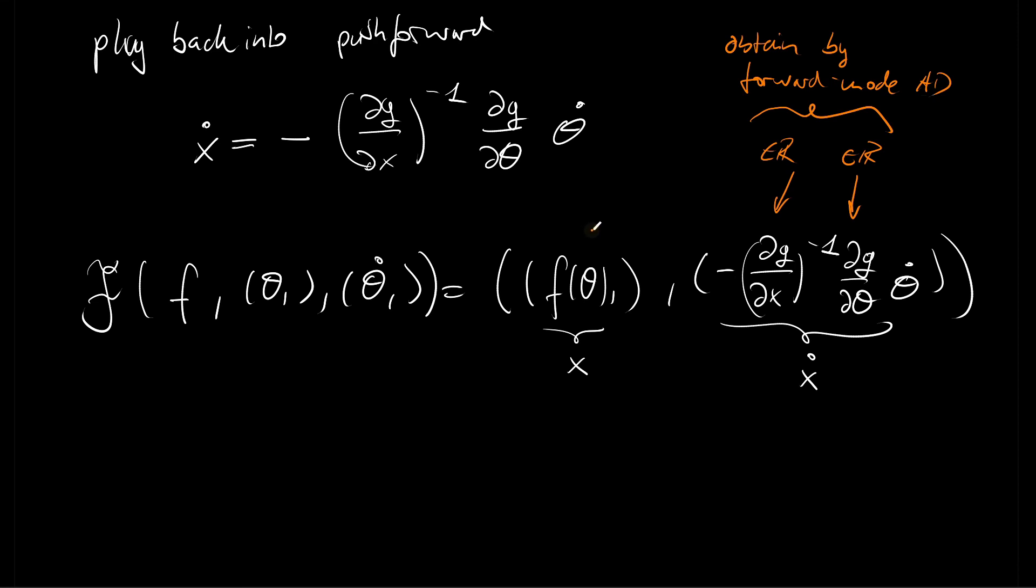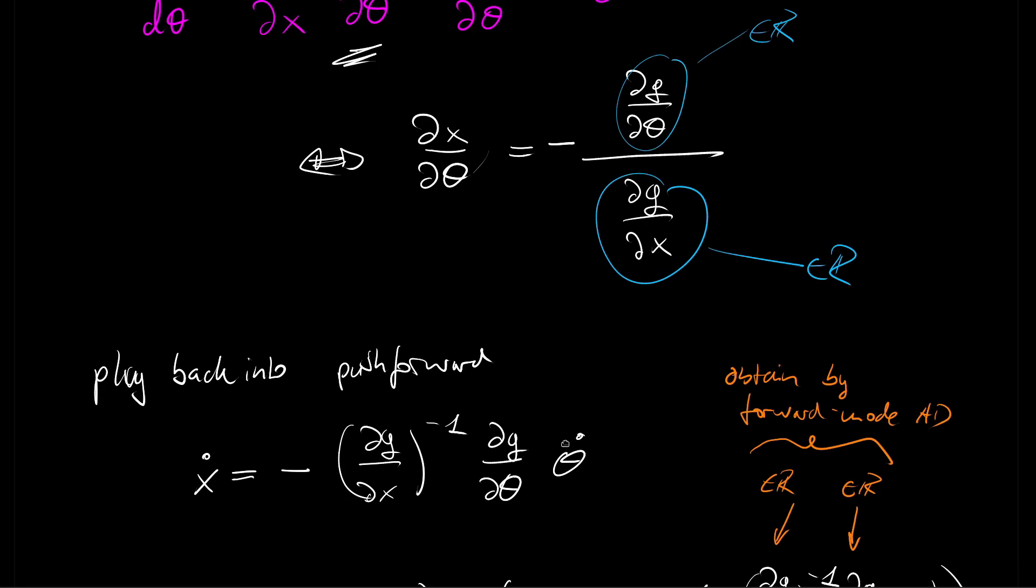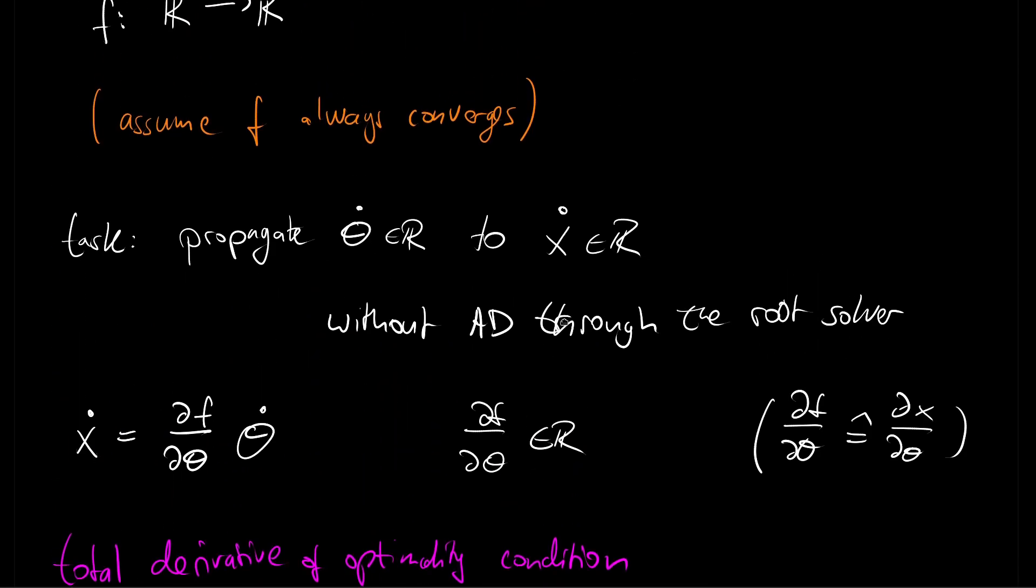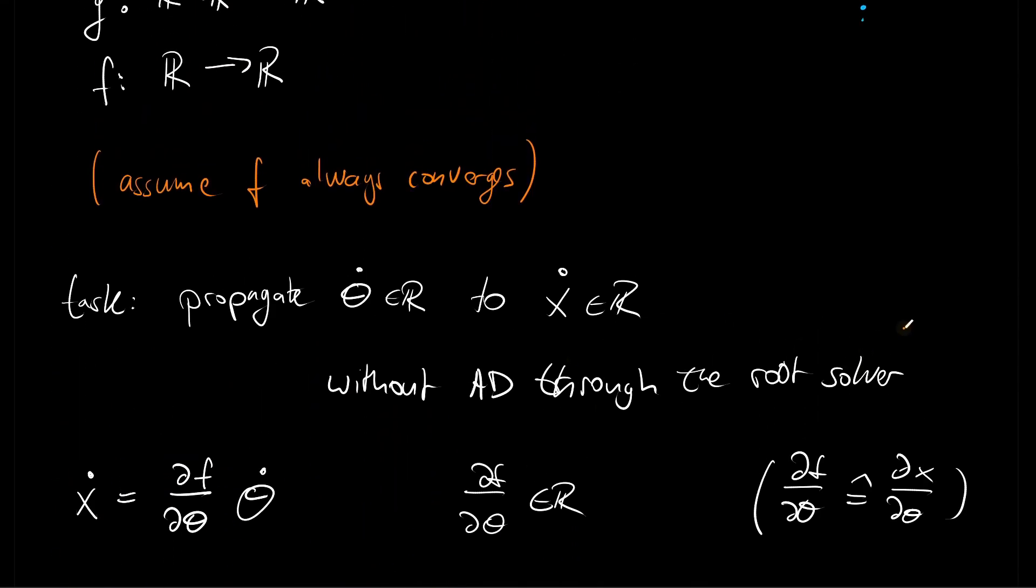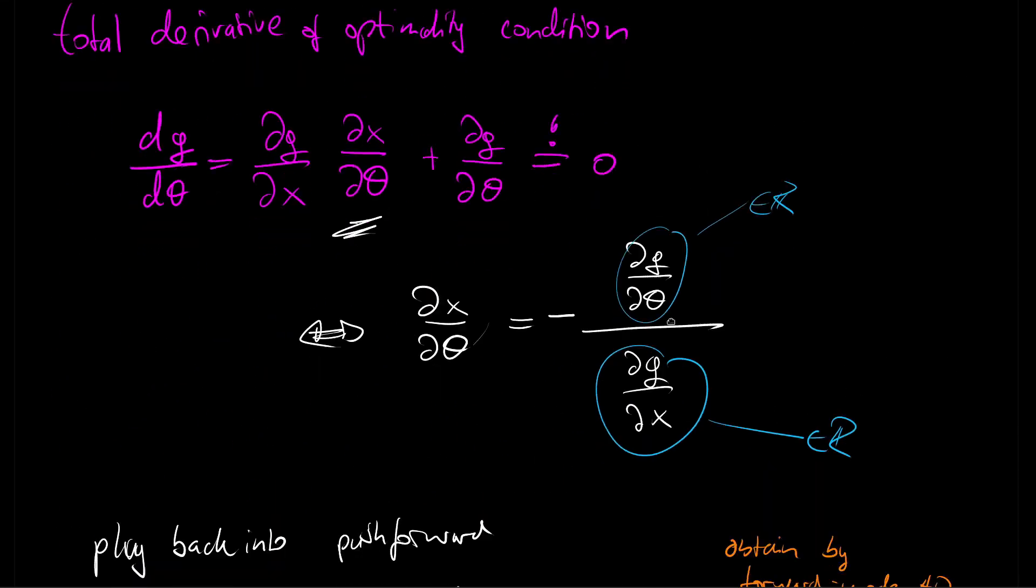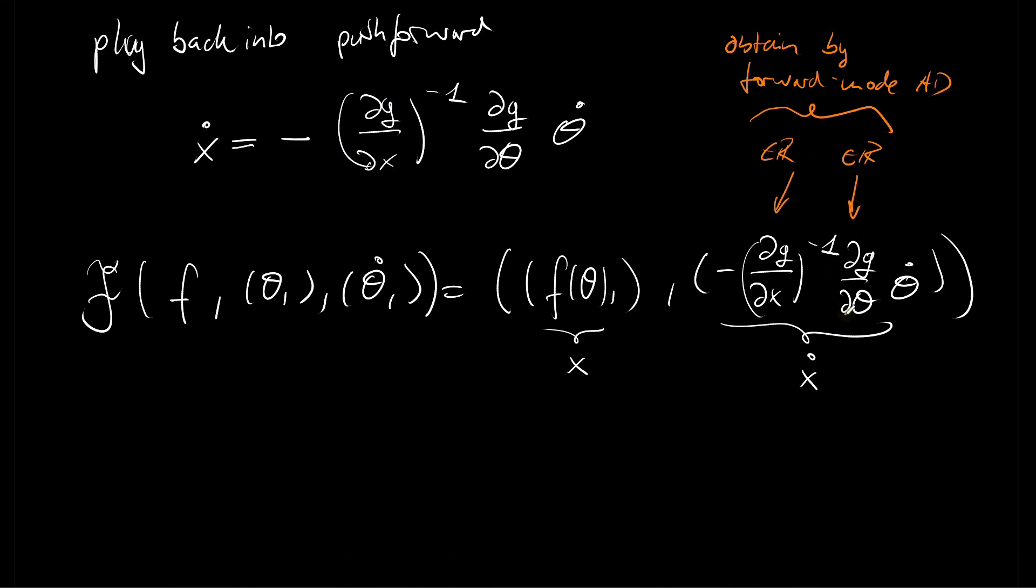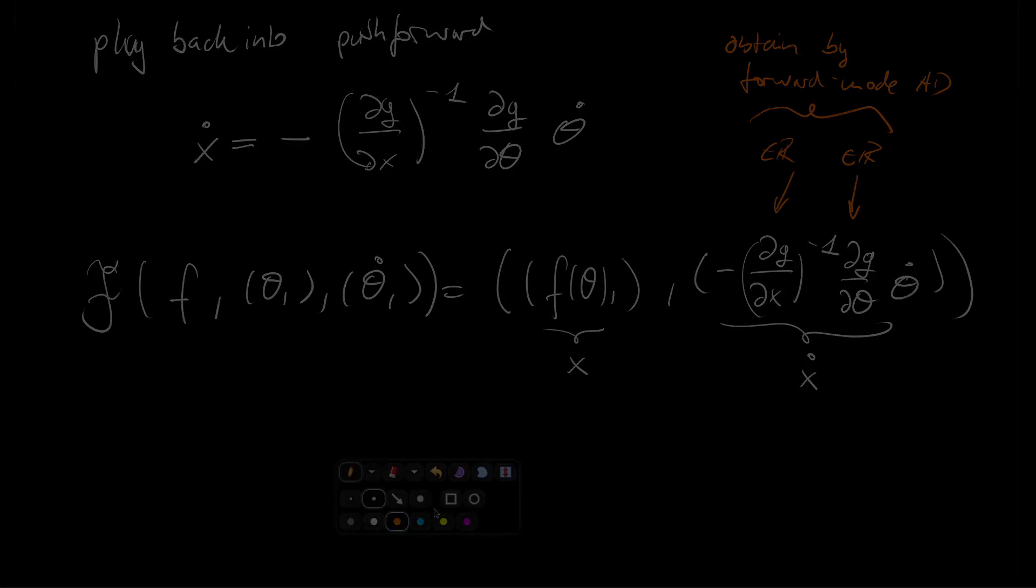And let me again wrap up. So the reason we did that is to avoid performing automatic differentiation through the root solver. Assuming it would work. Sometimes this does not work. And then we would have no other choice than using this implicit differentiation here. So in a sense, we avoided those propagations through the iterations of the root solver by just having some propagation involving derivatives on the optimality condition.